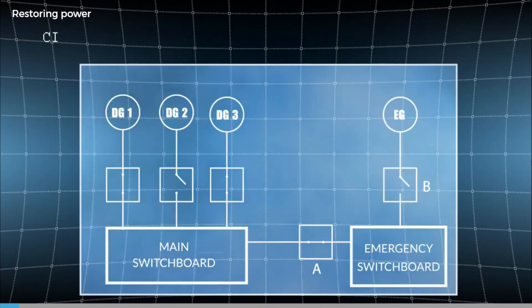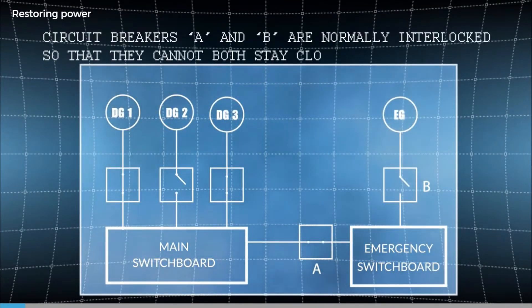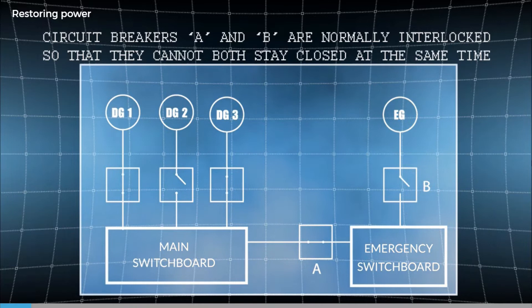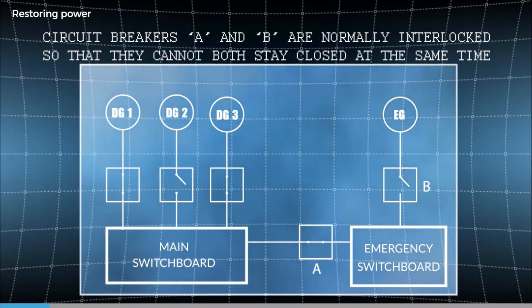We need to keep in mind that on most, but not all, ships, we can't run the main and emergency generators in parallel. We can often synchronise them, but there are usually two circuit breakers, arranged so that only one of them can be closed at any given time.